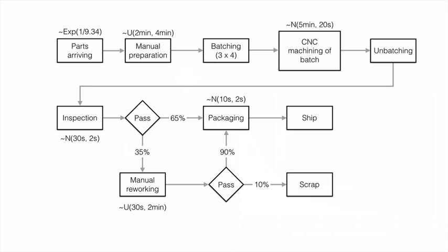The packaging time is approximated by a normal distribution with mean 10 seconds and standard deviation of two seconds. The manual reworking is again quite a lengthy process, and we assume that reworking time follows a uniform distribution anywhere between 30 seconds and two minutes.